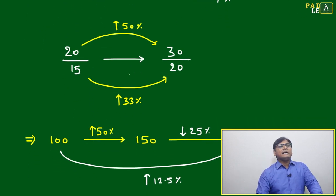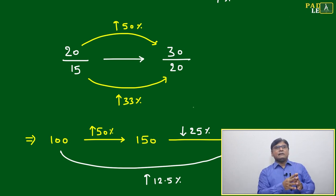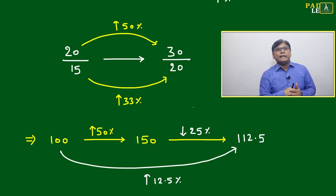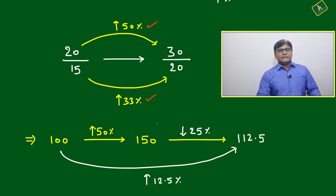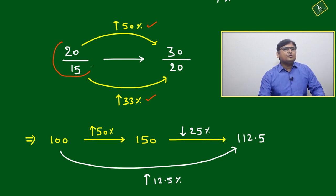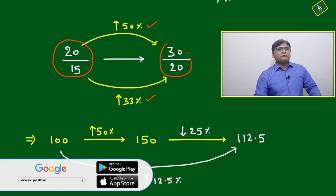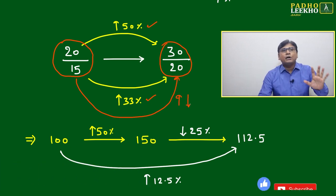Suppose 20 by 15 changes to 30 by 20 — I'm using an arrow, not an equality sign. The individual changes are: numerator changes from 20 to 30, which is a 50 percent increase, and the denominator changes from 15 to 20, which is an increase of 33 percent. Now we want to check the overall percentage change in this ratio — whether it increases or decreases.